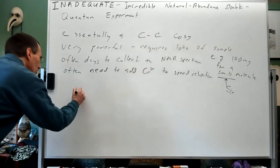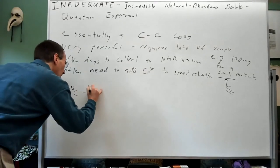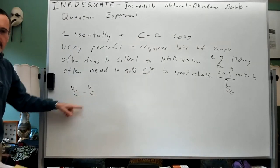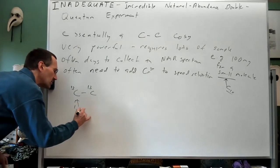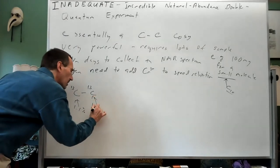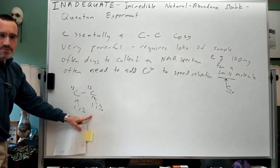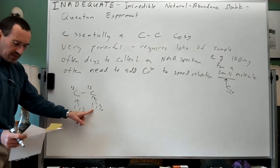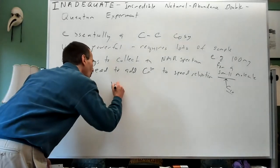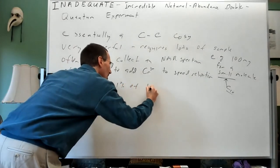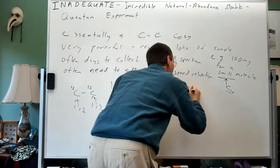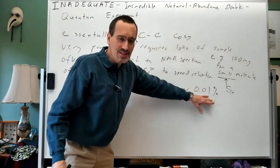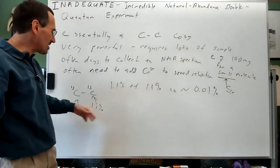The reason this is such a killer experiment is you've got to have two C13s next to each other. We do lots of C13 experiments but those rely on the fact that you've got about 1.1 percent natural abundance. But the odds of having two carbons next to each other both being C13 are 1.1 percent of 1.1 percent, so about 0.01 percent.